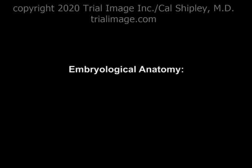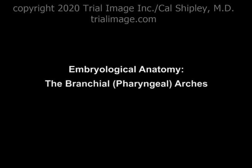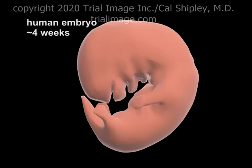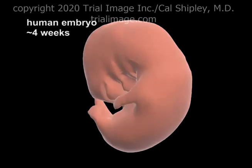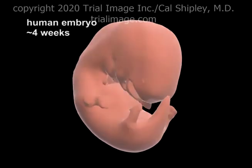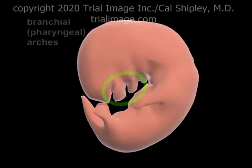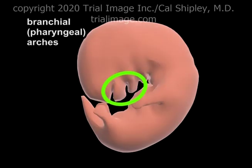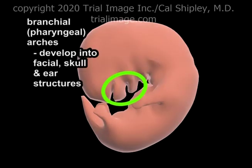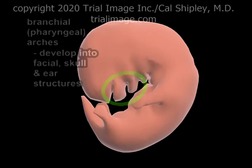In order to better understand the underlying causes and pathogenesis of hemifacial microsomia, let's take a look at some embryological anatomy, starting with the branchial arches. Here is a human embryo at approximately four weeks of growth. The branchial arches, also known as pharyngeal arches, develop to form structures of the face, skull and ear.